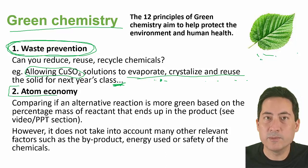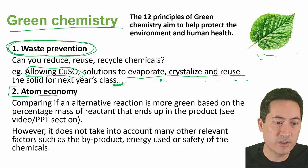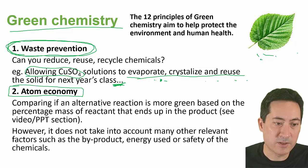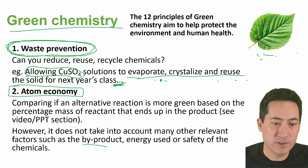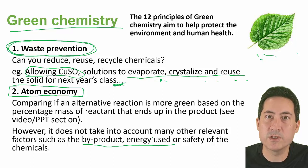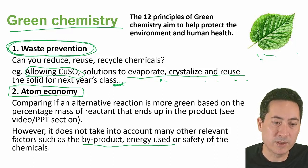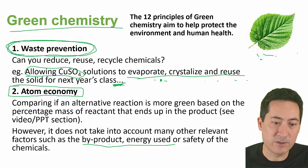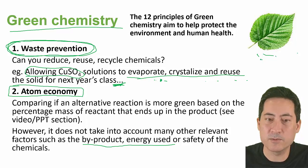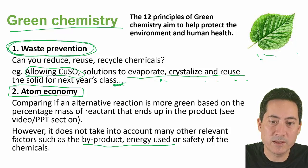Atom economy has a separate video because there's an equation and practice involved. Note that it's only one of the 12 principles, and you need judgment to decide which is more significant. A reaction may have very good atom economy but have dangerous products, be too expensive, use too much energy, or be unsafe — so one principle may trump another.